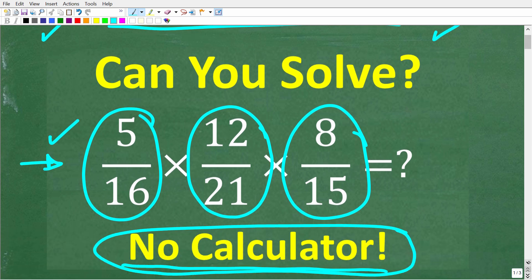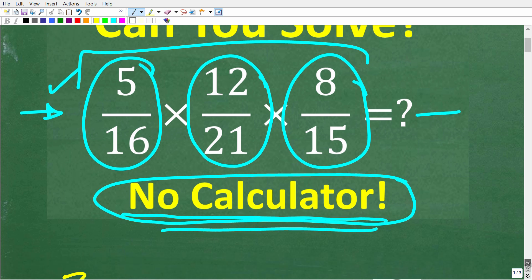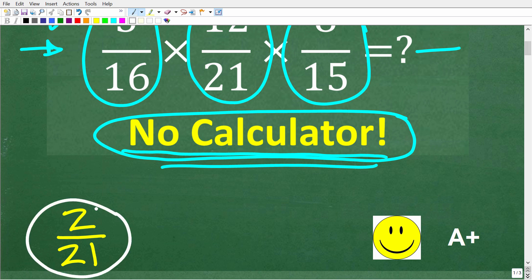All right, so one more time we have 5 over 16 times 12 over 21 times 8 over 15. What is the product of all these fractions without a calculator? Well, the correct answer here is 2 over 21.